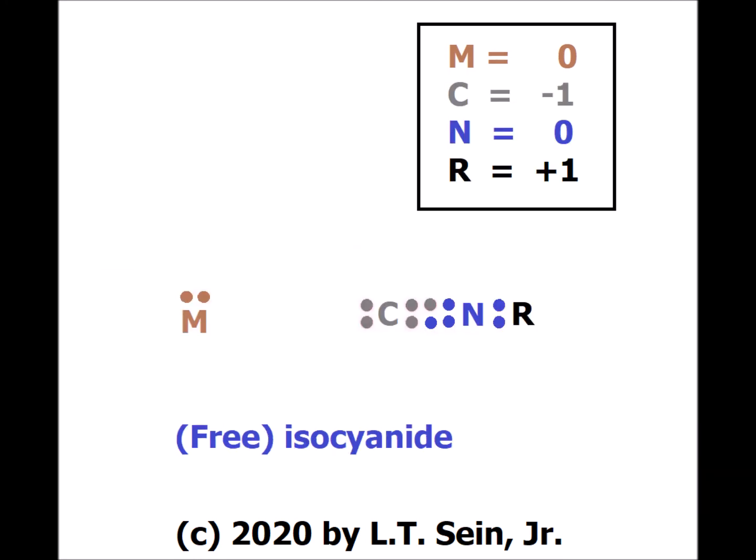Our final ligand is actually an entire class of ligands: the isocyanides, CNR, where R is an alkyl group. The metal is shown in its native state with two valence electrons, and in the free isocyanide, the carbon — just like in carbon monoxide — has a formal charge of minus one, nitrogen has a formal charge of zero, and the alkyl group R must have a formal charge of plus one. Recall that for any neutral compound the sum of the formal charges must equal zero, and for any ion the sum must equal the charge on the ion.